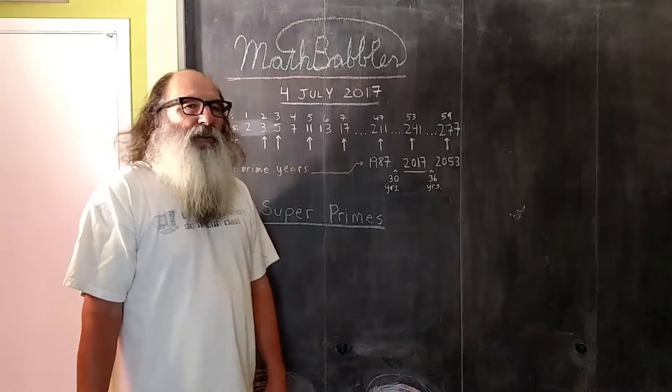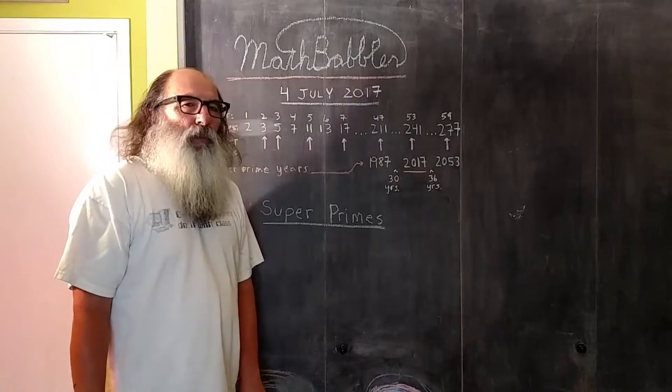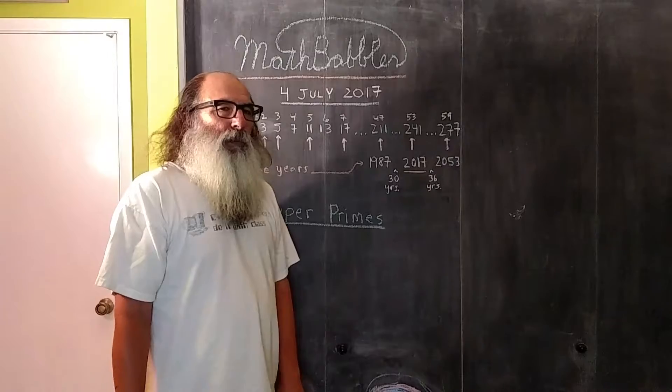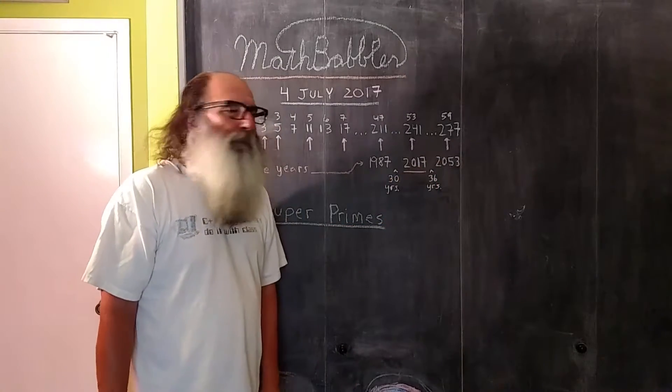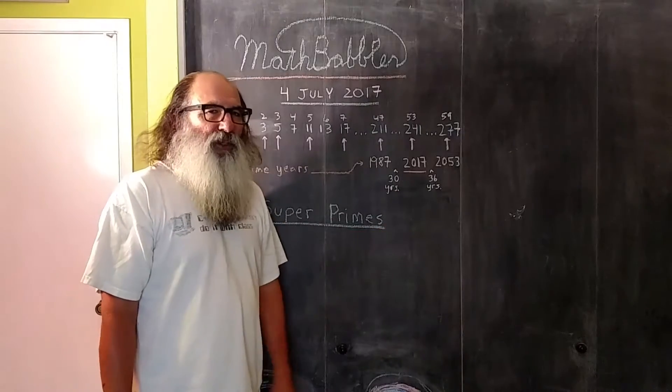So that means after this year, the next time the United States is super prime aged will be the year 2053, which is 36 years from now.